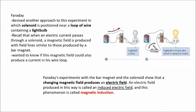Faraday devised another approach in which a solenoid is positioned near a loop of wire containing a light bulb. A solenoid is a helical winding of wires on a cylindrical form, circular in cross-section. When an electric current passes through the solenoid, a magnetic field is produced with field lines similar to those of a bar magnet. Faraday wanted to know if this magnetic field could also produce a current in the nearby loop.